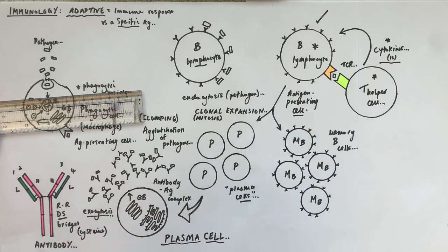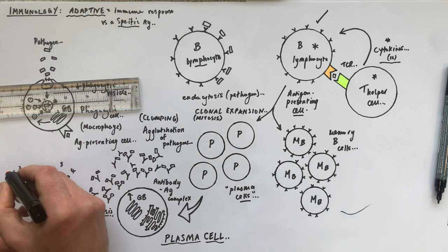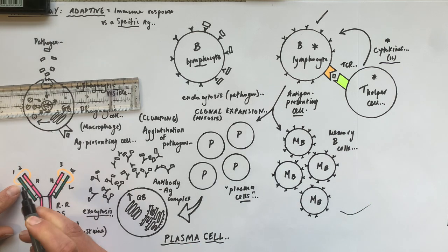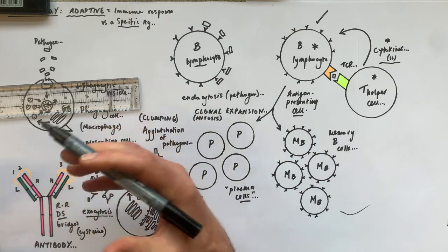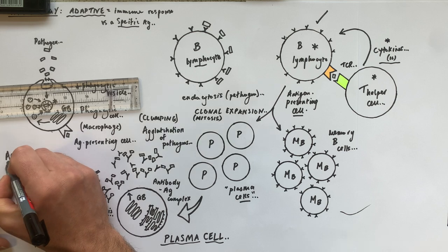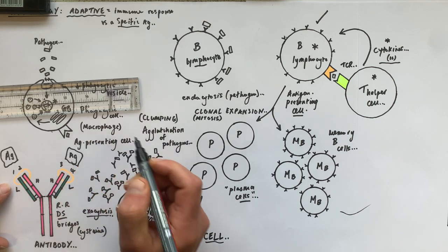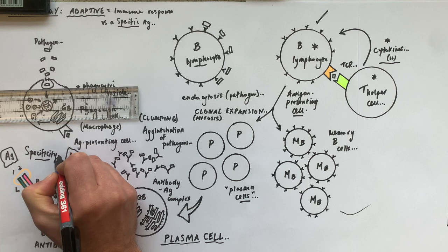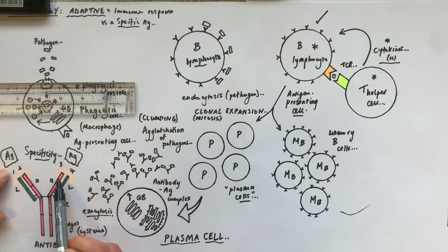The top part of the antibody is called the antigen-binding site. Each polypeptide chain has a specific tertiary structure, and the four tertiary structures at the tip, folded in a globular 3D shape, are complementary to an antigen. Both tips of the antibody are complementary to the same antigen, giving the antibody specificity due to complementary binding shapes between the antigen and the antigen-binding site.